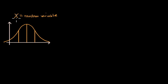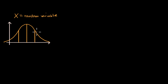Let's say that we have a random variable x. Maybe it represents the height of a randomly selected person walking out of the mall, or something like that. Right over here we have its probability distribution, and I've drawn it as a bell curve, as a normal distribution, though it could have many other distributions. I've also drawn the mean of this distribution, one standard deviation above the mean, and one standard deviation below the mean.